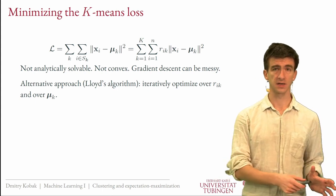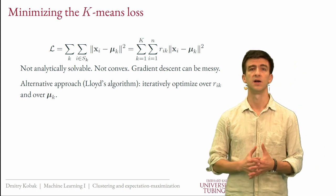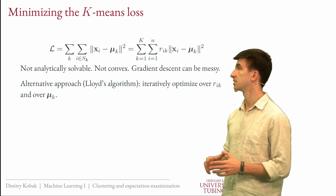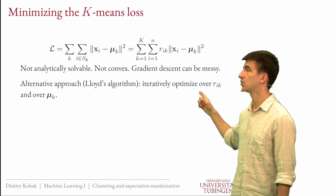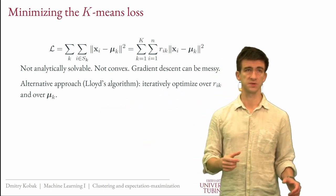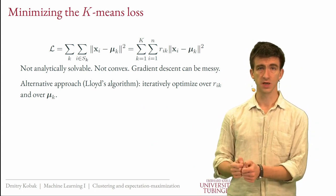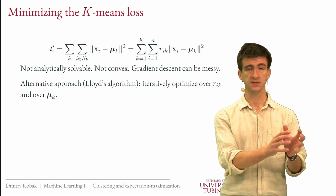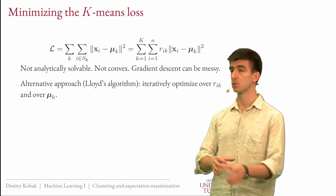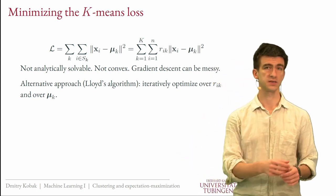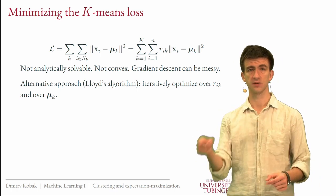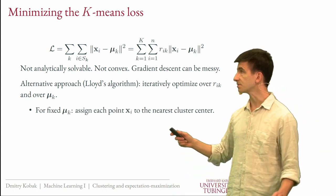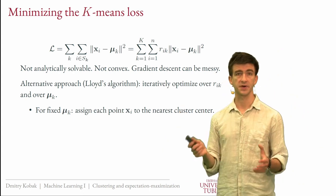The good news is that there is an alternative approach that is very simple, very intuitive, and works well. For k-means, it's called Lloyd's algorithm. It iteratively optimizes over r and over the mus: first we find optimal mus having the cluster assignments fixed, then we hold the mu vectors fixed and optimize the splitting of points into clusters. We keep repeating these two steps until convergence. It turns out that each of the steps is very, very easy.